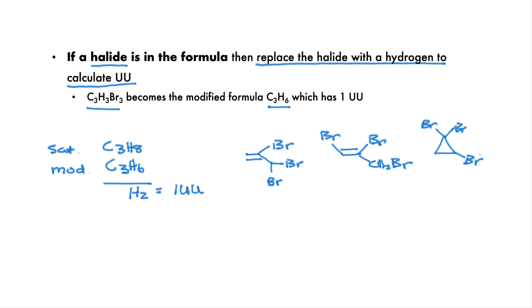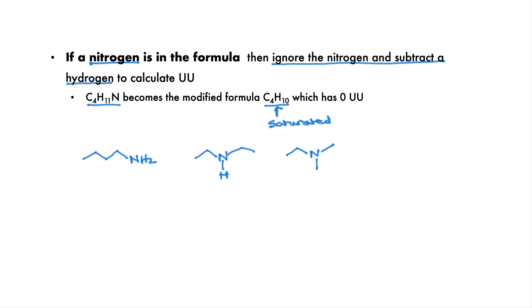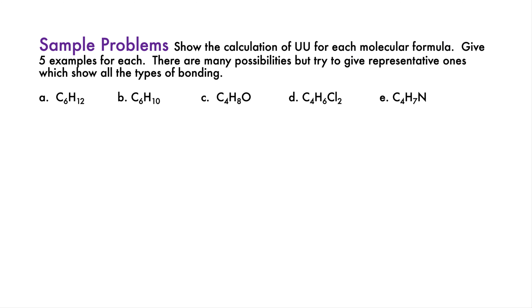If there is a nitrogen in the formula, ignore the nitrogen and subtract a hydrogen to calculate units of unsaturation. C4H11N becomes the modified formula C4H10, which is the fully saturated formula, so there are no units of unsaturation — no double bonds or rings. The first compound has an NH2 at the end of a long chain. We can also have the nitrogen in the middle with two carbon units on either side. The last compound has one two-carbon unit and two one-carbon units. Pause and try these sample problems: show the calculation of units of unsaturation for each molecular formula and give five representative examples for each.